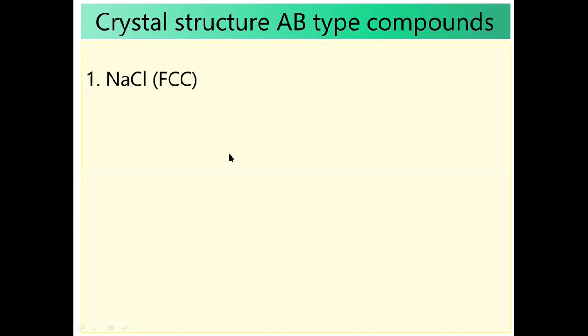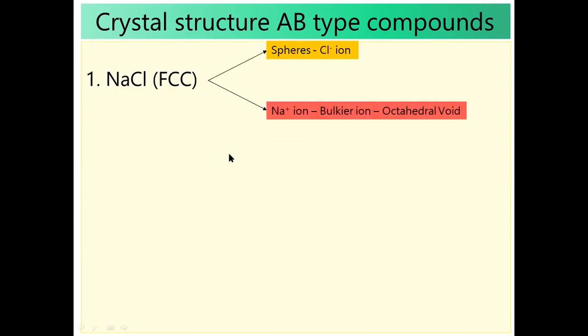In NaCl FCC structure, chloride ions occupy all sphere positions. The position of spheres is the eight corners and six faces of a cube. Na+ is a bulkier cation — Na+ belongs to the S-block. S-block metal atoms are the bulkier atoms. Hence, Na+ occupies the octahedral void.